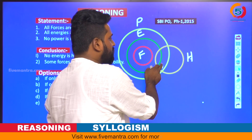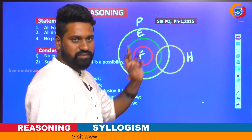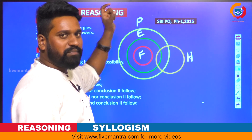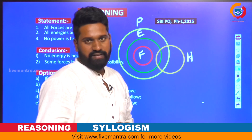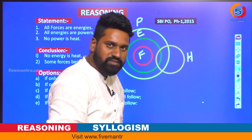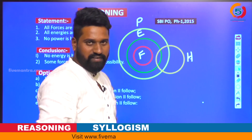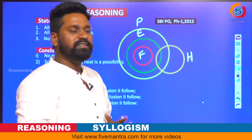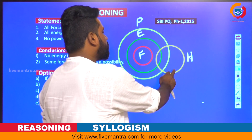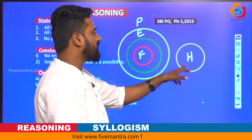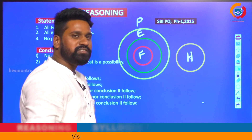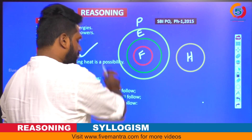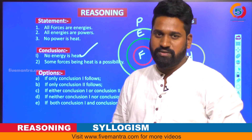If we tried to place heat intersecting with energy, that would give 'some energies are heat.' But the statement clearly says no power is heat, and since energies are inside powers, we cannot intersect energy and heat without violating that rule. So the first conclusion, no energy is heat, is absolutely correct — it is a direct, definite conclusion.